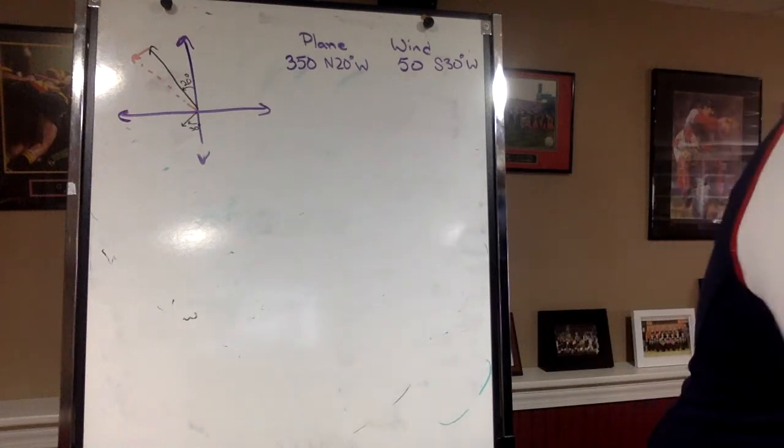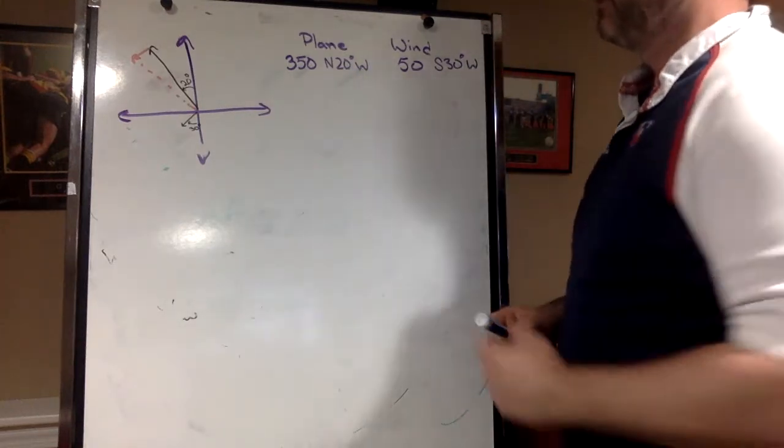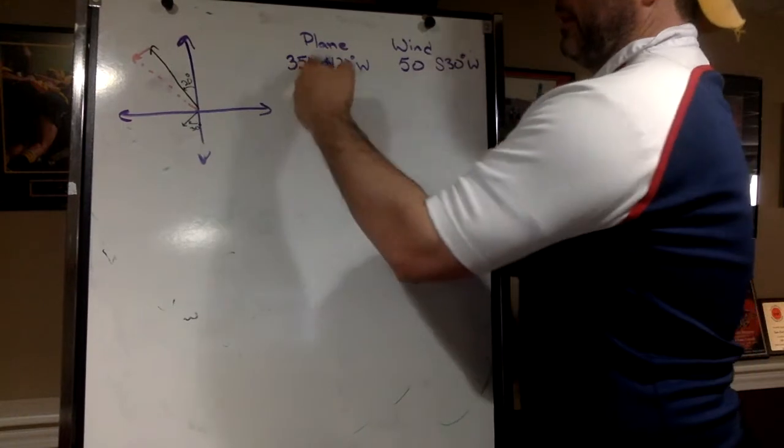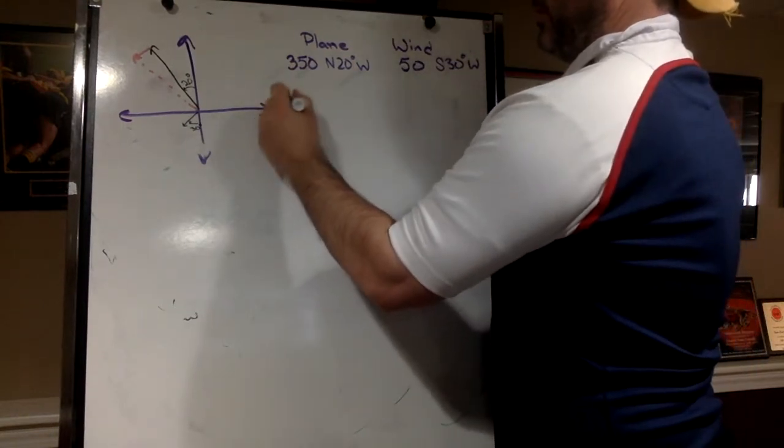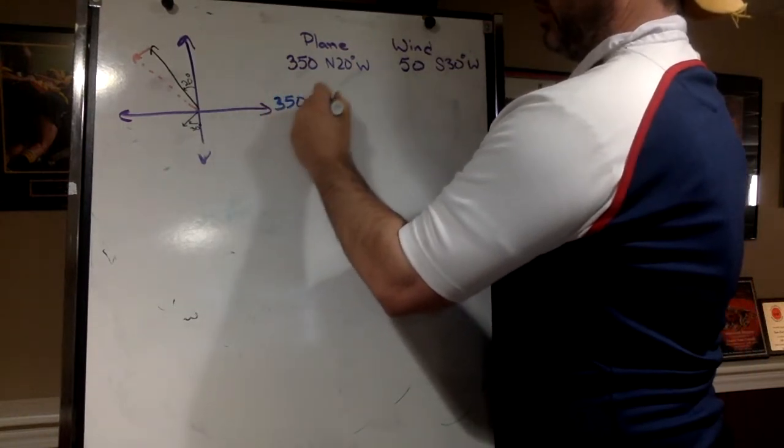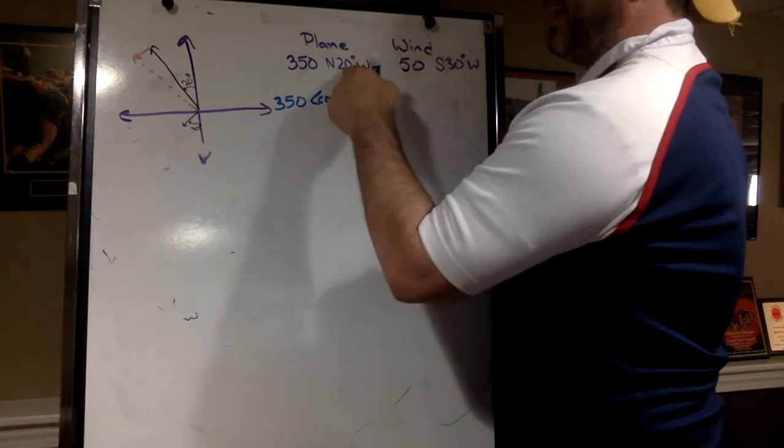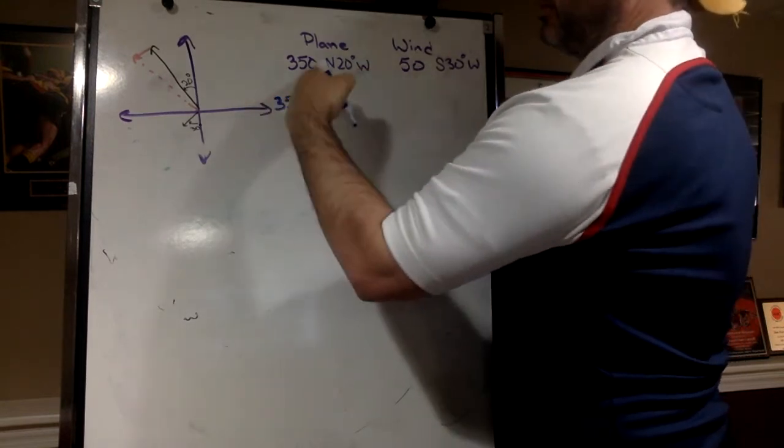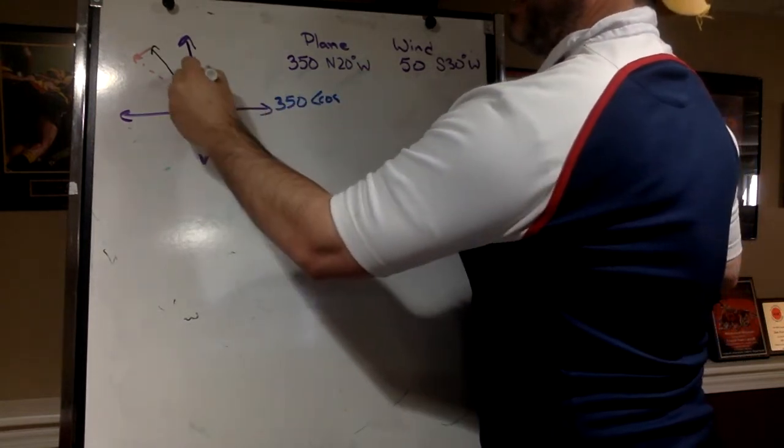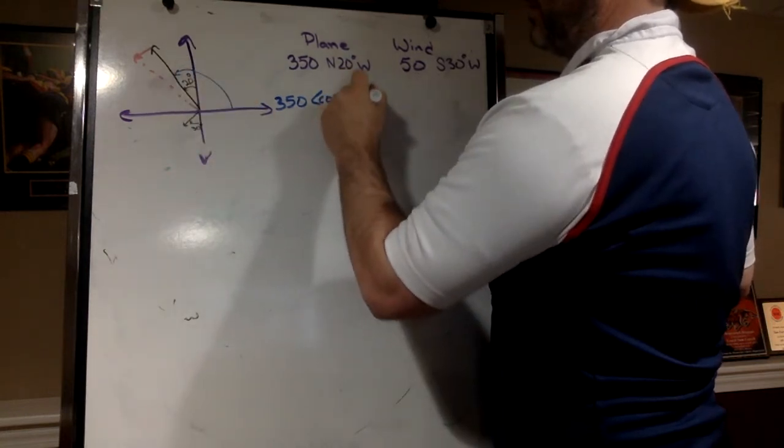First thing we're going to do is we're going to write the vectors for each of these. So remember we've got our magnitude, our speed, 350 cosine. Now we need our direction angle, so our plane is 90 plus 20 more, so that's 110 degrees, sine of 110.